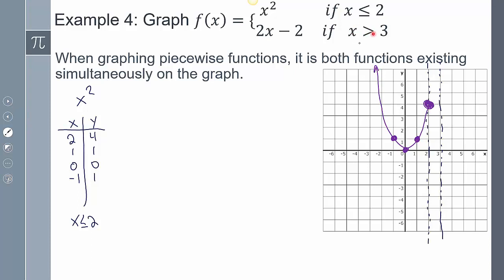Then for this one, 2x minus 2, where x is greater than or equal to 3. So I start at 3, 4, and 5. If I plug in 3, I get 4. Plug in 4, I get 6. Plug in 5, I get 8. Plotting those values, because there's no equal to, it's going to be an open circle there. Connect them, and I get that line there.